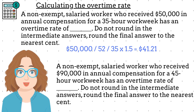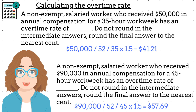first by 52, which is the number of weeks in the year. Then we divide the result by 45, because 45 is the number of hours in the workweek. That result is the hourly rate. However, we want the overtime rate, which means we need to multiply the hourly rate by 1.5. The result is $57.69.